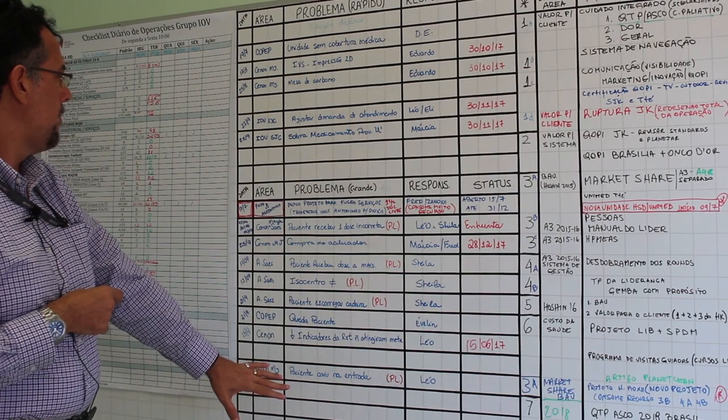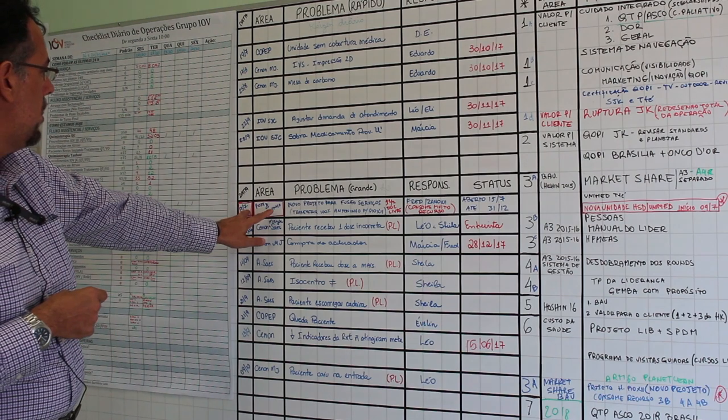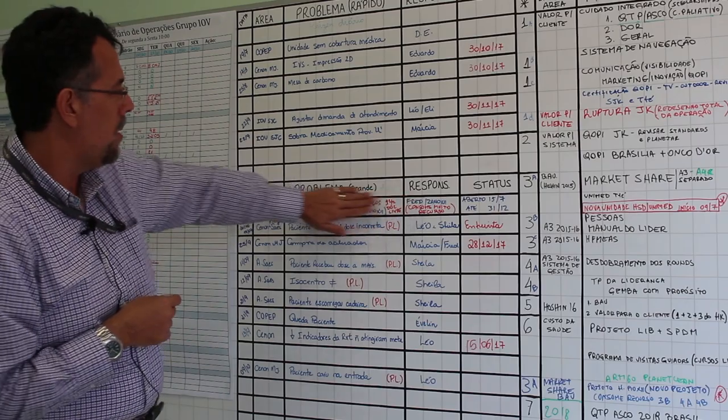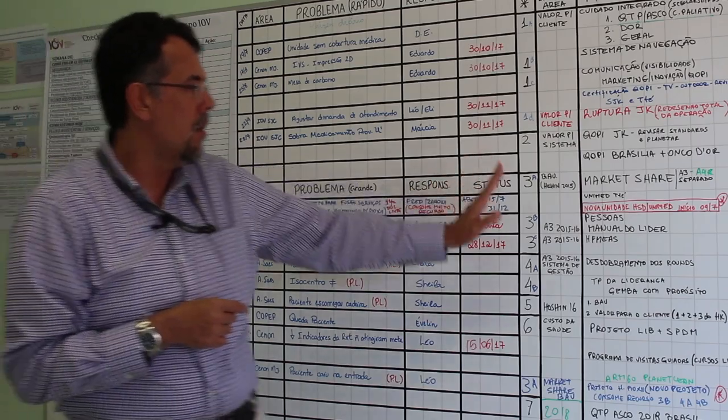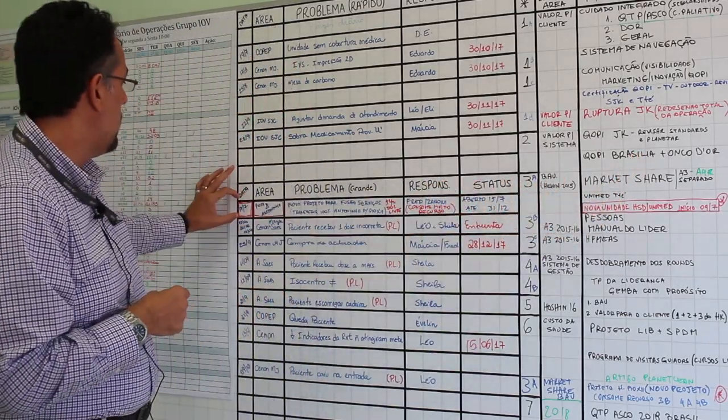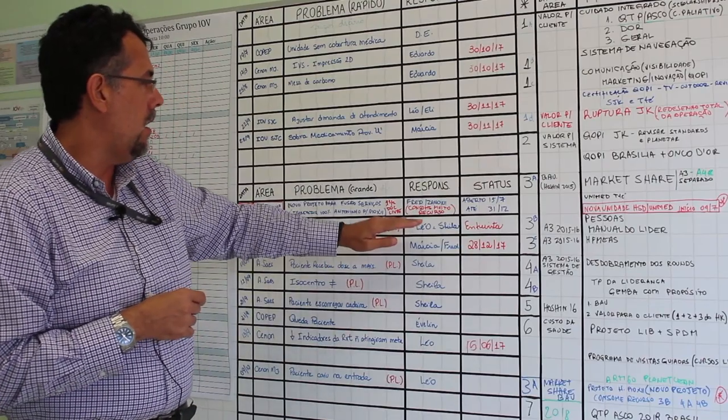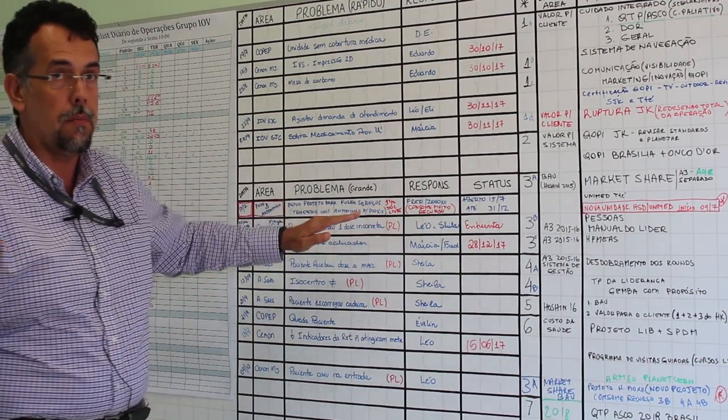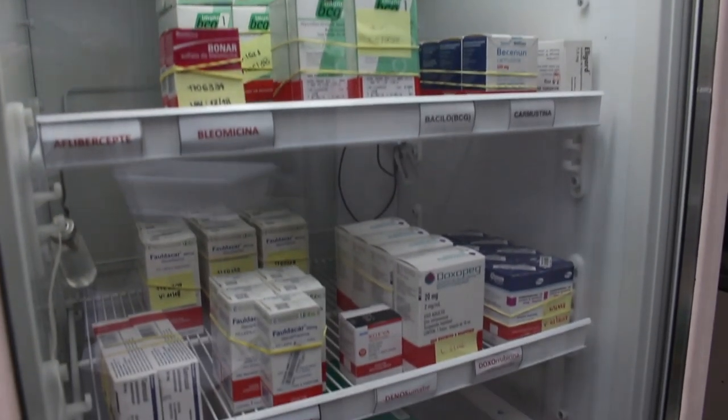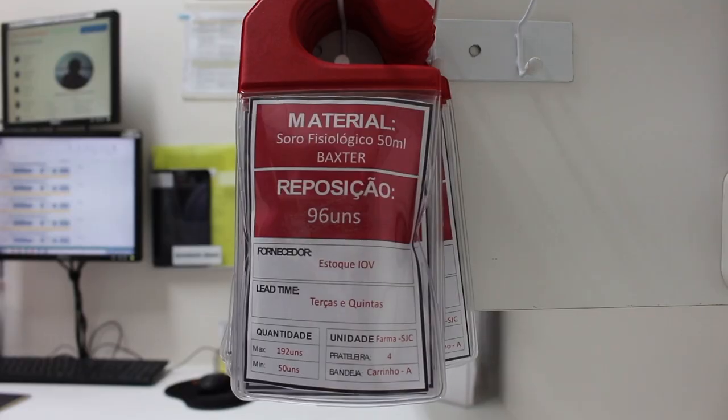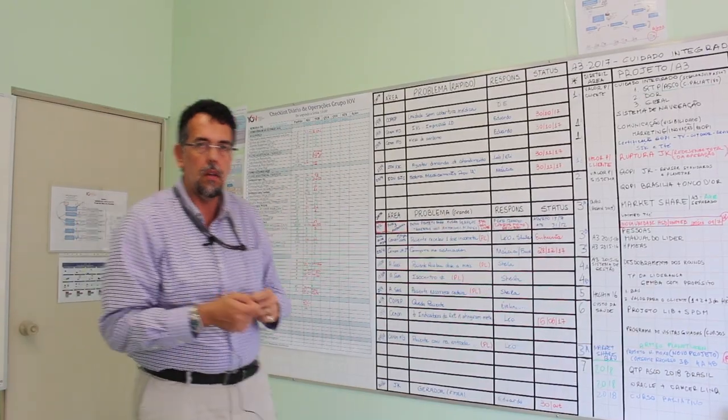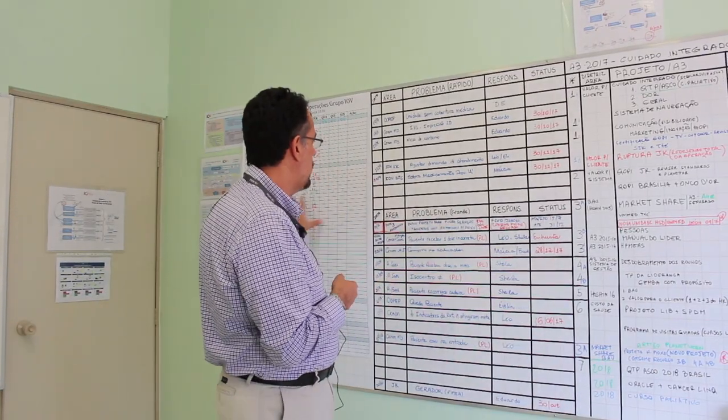And these are big problems. This is one big problem that emerged in July. We are working this project - this problem had a huge impact on our Hoshin for 2017. That's the number one problem that we have to manage, and it is consuming a lot of resources. It wasn't planned. So this is the area where we look for big problems. Every day we meet here at 10 a.m., everyone shares the picture of our day.